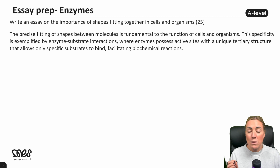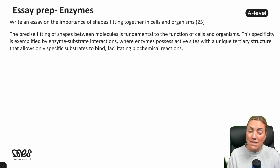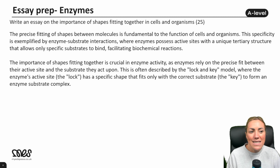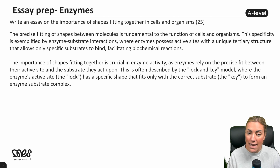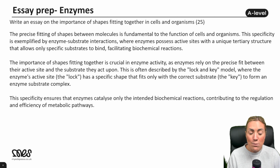The precise fitting of shapes between molecules is fundamental to the function of cells and organisms. This specificity is exemplified by enzyme-substrate interactions, where enzymes possess active sites with a unique tertiary structure that allows only specific substrates to bind, facilitating biochemical reactions. The importance of shapes fitting together is crucial in enzyme activity, as enzymes rely on the precise fit between their active sites and the substrate they act upon. This is often described by the lock and key model, where the enzyme's active site — the lock — has a specific shape that fits only with the correct substrate — the key — to form the enzyme-substrate complex. This specificity ensures that enzymes catalyse only the intended biochemical reaction, contributing to the regulation and efficiency of metabolic pathways.